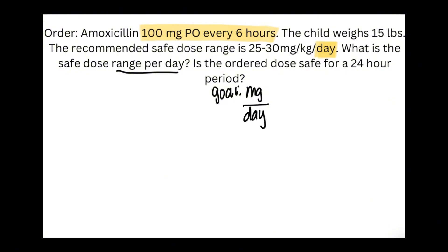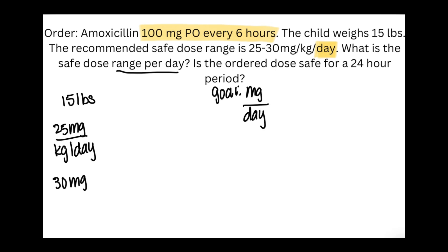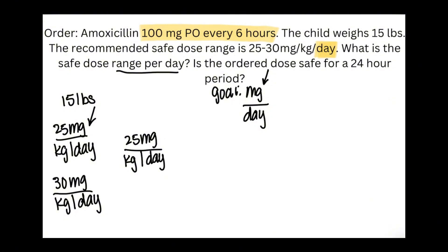Now we can pick out our puzzle pieces because this is based on the patient's weight. We're going to need our 15 pounds. The least we can give is 25 milligrams per kilogram per day, and the most we can give is 30 milligrams per kilogram per day. We'll do two different equations to find the lower and upper limits. Starting with the lower limit, we need milligrams at the top, so I'll start with 25 milligrams per kilogram per day — milligrams on top, day on the bottom.